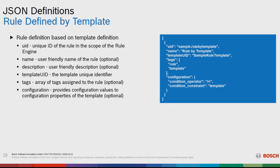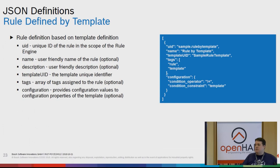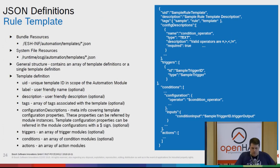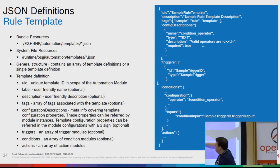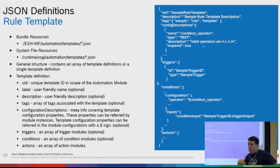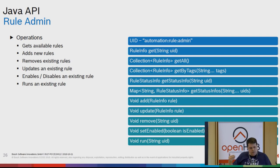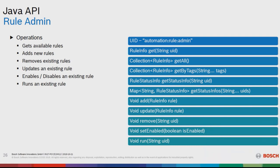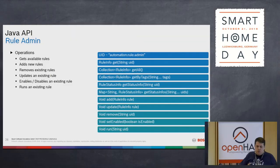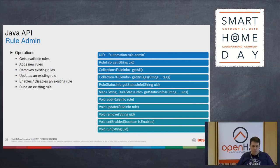With templates, you can reuse existing templates for a new rule. A template defines a trigger, the conditions that need to be met, and what action happens when all conditions are satisfied. The Java API allows you to get available rules, add new rules, remove or update existing ones, enable or disable them, and execute them — and this also applies to functional item interactions.